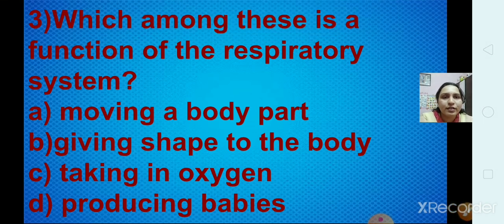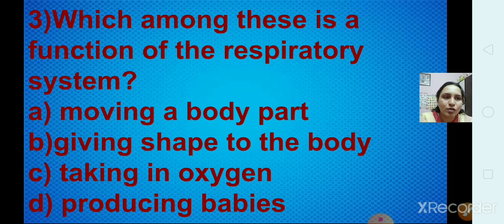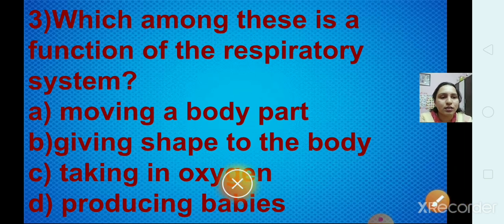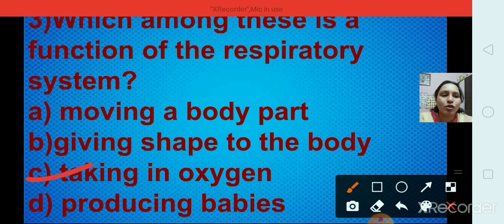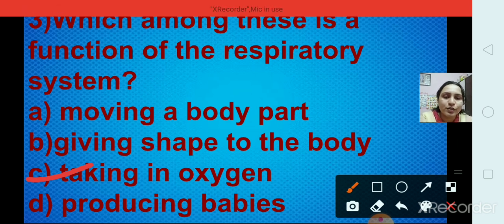Question number 3: Which among these is a function of the respiratory system? Options are: moving a body part, giving a shape to the body, taking in oxygen, and producing babies. The right answer is option C, taking in oxygen. Moving a body part and giving shape to the body are functions of the skeletal system, and producing babies is a function of the reproductive system.